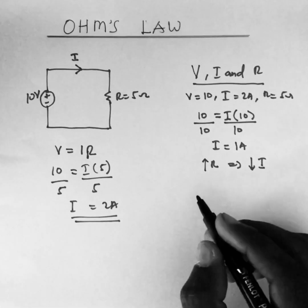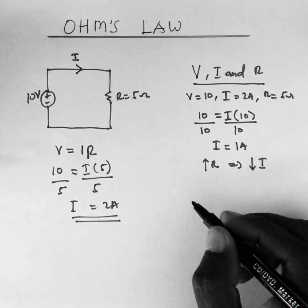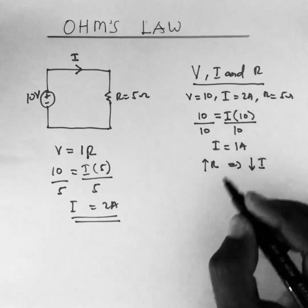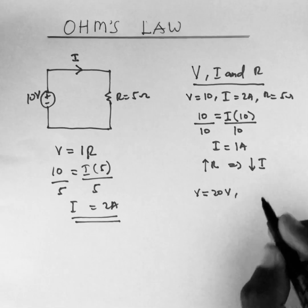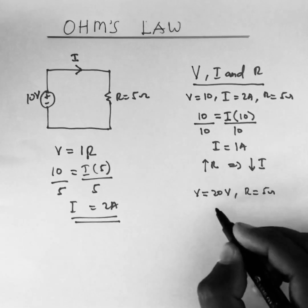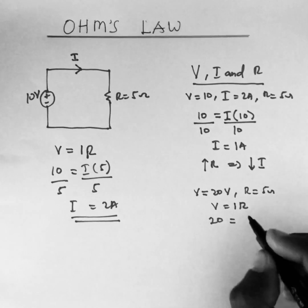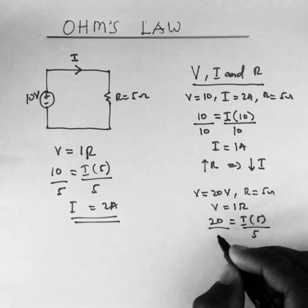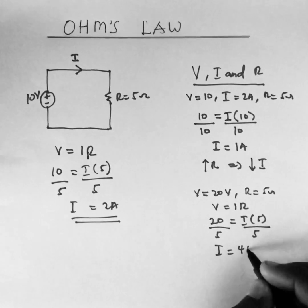Now let's increase the value of v and maintain the value of r to see how the current behaves. We increase v from 10 to 20 volts while maintaining r at 5 ohms. Using Ohm's Law: 20 is equal to i multiplied by 5. Dividing both sides by 5, we get i to be 4 amperes.